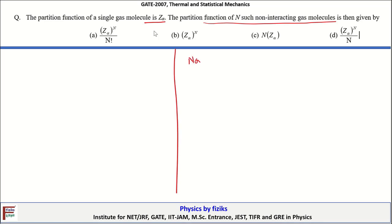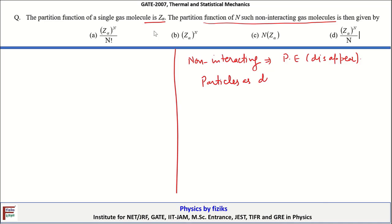When we use the word non-interacting, that means the potential energy will disappear. This non-interacting system of gas molecules is easily dealt with in the ideal gas formalism. In the ideal gas formalism we treat the particles as distinguishable, even though in principle the particles are not distinguishable.